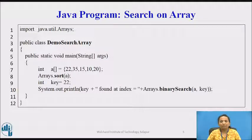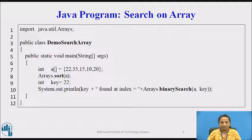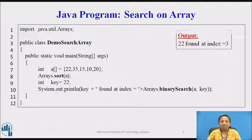Here is a simple Java program to demonstrate use of the sort method and binary search method from the Arrays class. First, integer array A is declared and initialized with values 22, 35, 15, 10, 20. On line 8, the sort method is called from the Arrays class with integer array A passed as parameter, arranging elements in ascending order. On line 10, this sorted array is passed to the binary search method along with search key 22, which returns the search result. In this case, 22 will be located at index 3 after sorting, so the output is: 22 found at index 3.